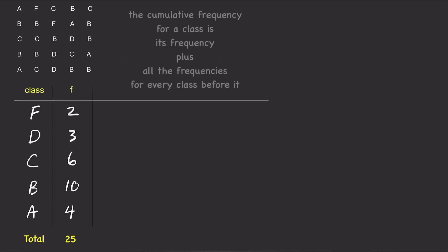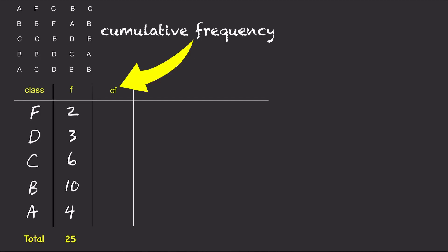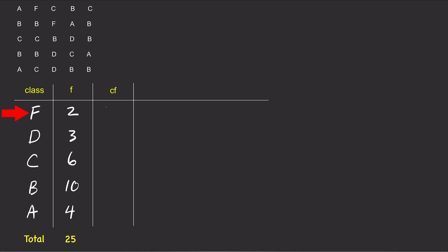The cumulative frequency for each class is simply the frequency for that class plus all the frequencies for every class that came before it. For the first class, F, the frequency is 2 and there are no other classes before it, so the cumulative frequency is 2.